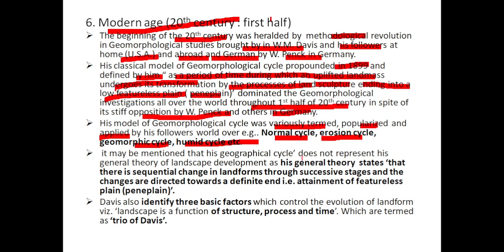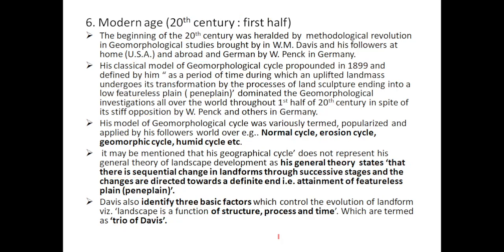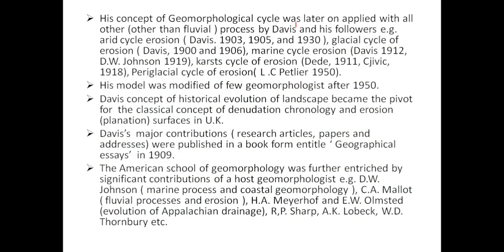His geographical cycle represents his general theory of landscape development, which states that there are sequential changes in landform through successive stages, and changes are directed toward a definite end — the attainment of a featureless plain, termed the peneplain. Davis also identified three basic factors which control the evolution of landforms: landscape is a function of structure, process, and time, which are termed the trio of Davis.